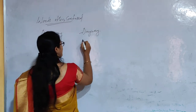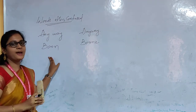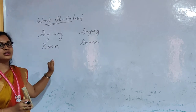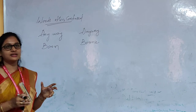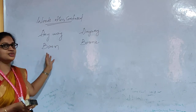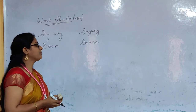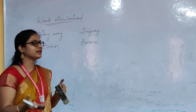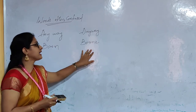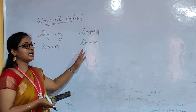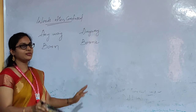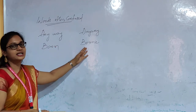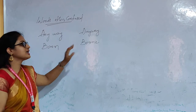The next word is 'born' and 'borne'. 'Born' (B-O-R-N) means to come into this world. For example: 'A baby girl was born in my sister's house.' 'Borne' (B-O-R-N-E) means to bear or carry — having a child or something. For example: 'My sister has borne a baby boy' — she is having a baby boy. So 'born' refers to coming into the world and 'borne' refers to bearing or having something.